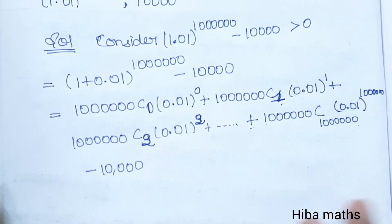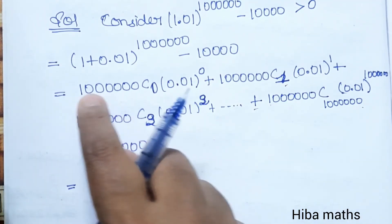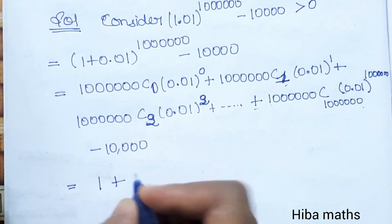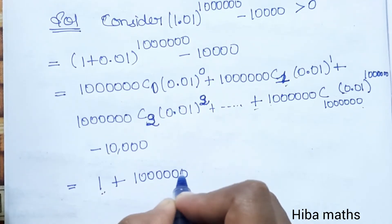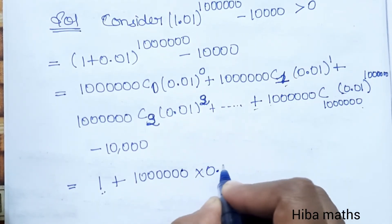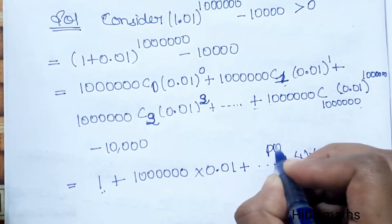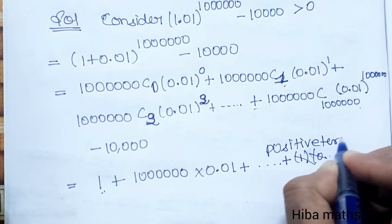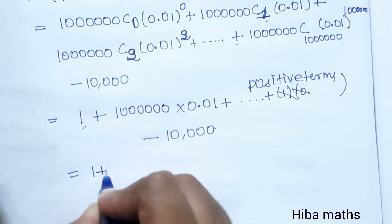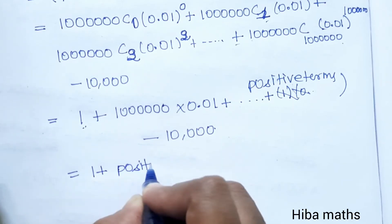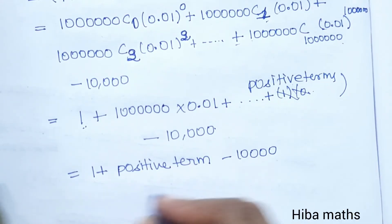So this expression, minus 10,000, is here. This line is a shorter way to solve it. So 1 plus the next value: n with value 1, 2, 3, 4, 5, 6, into 0.01, plus that term — and all the remaining terms are positive. So keeping the positive terms and minus 10,000, even after subtracting 10,000 from the positive terms, the answer is still greater than 0.